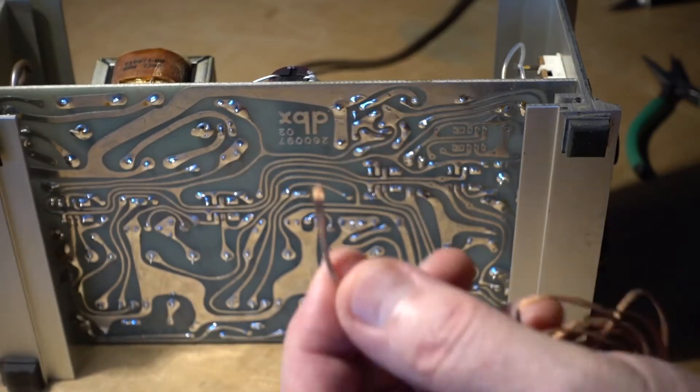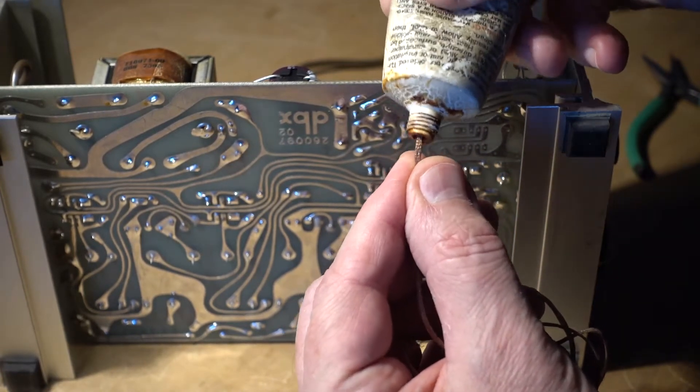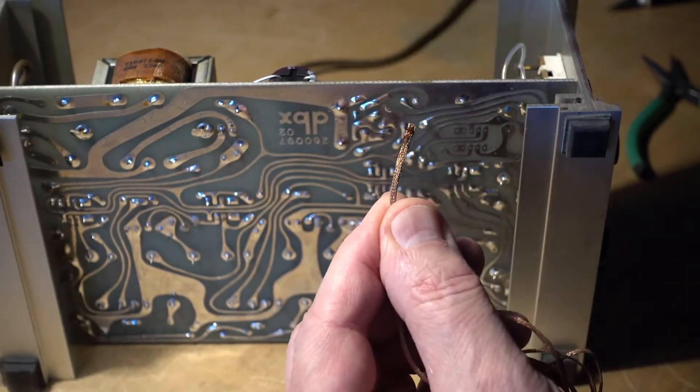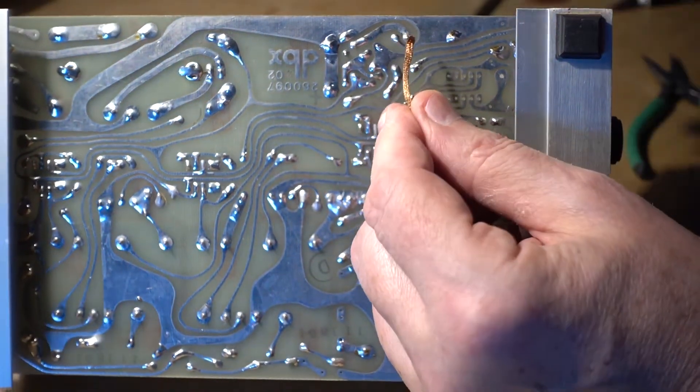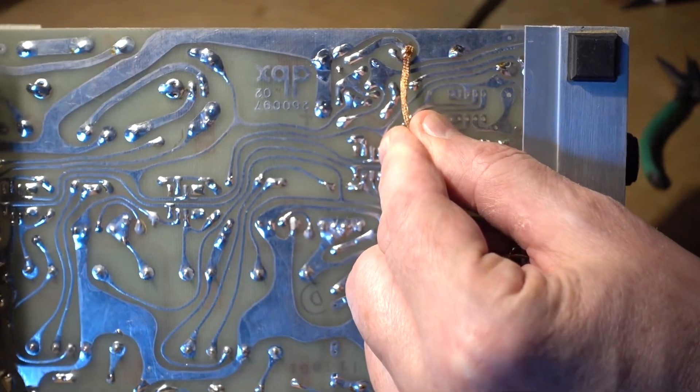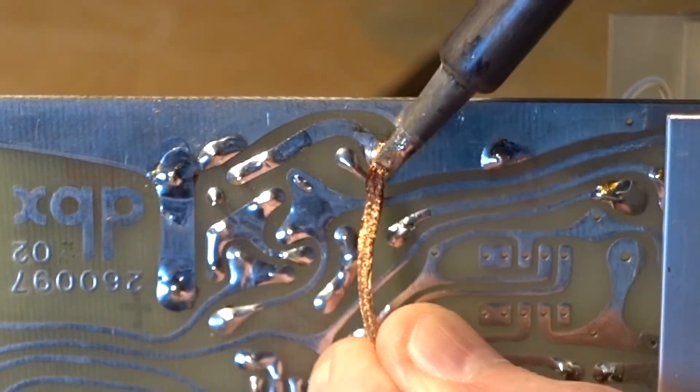I use the desoldering wick here. Just a little bit of flux. And now I can suck all the solder out of the holes to make them clean and see through.